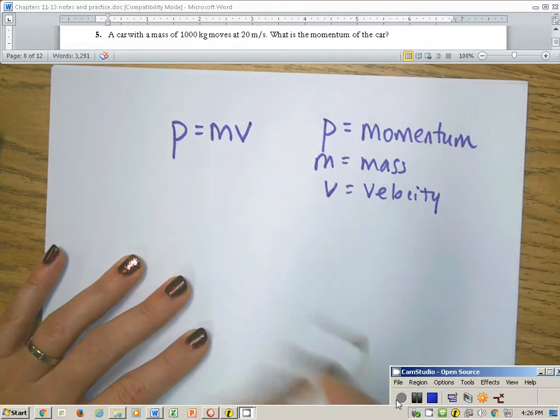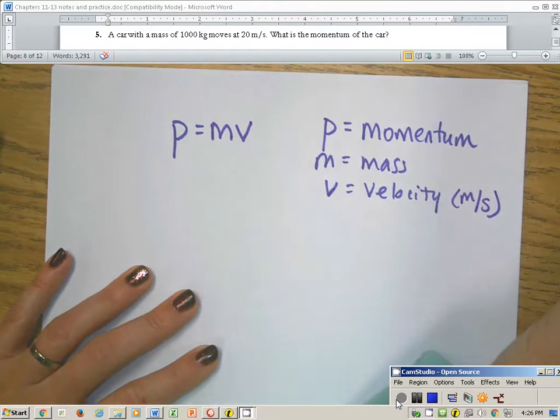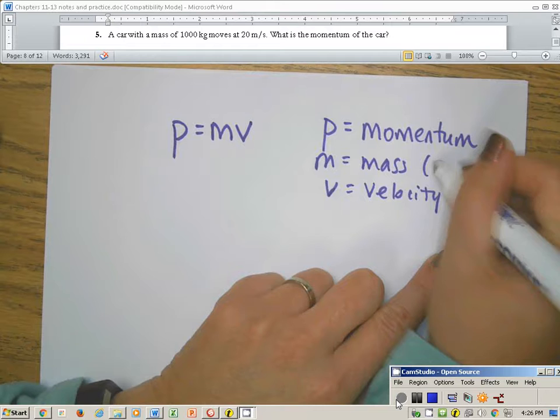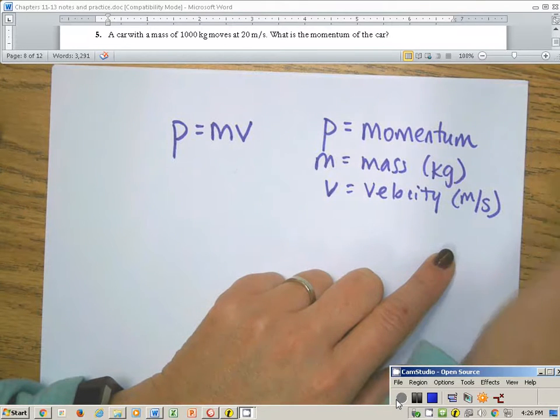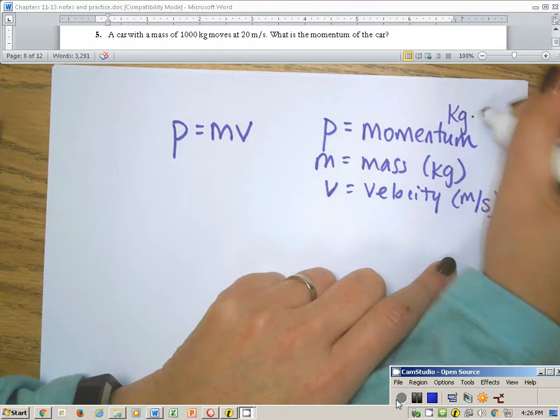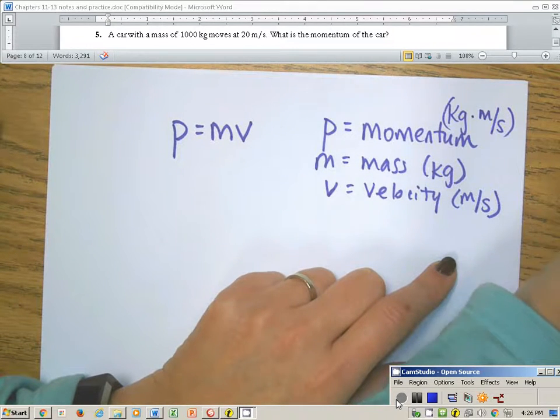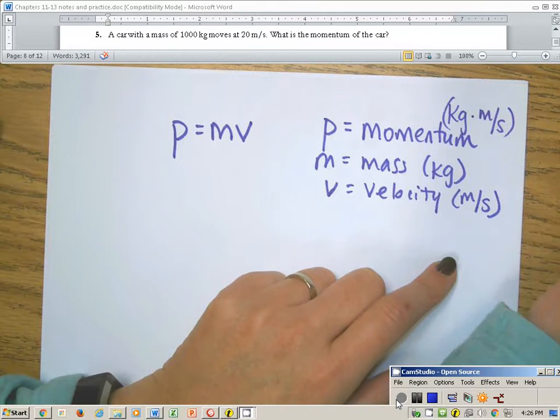We need to know the units of these things to make our lives easier. Velocity needs to be in meters per second. Mass needs to be in kilograms, and the unit of momentum once these two things is had will be kilograms times meter per second. It's kind of weird, but again, it's kind of like the p standing for momentum, it is what it is.